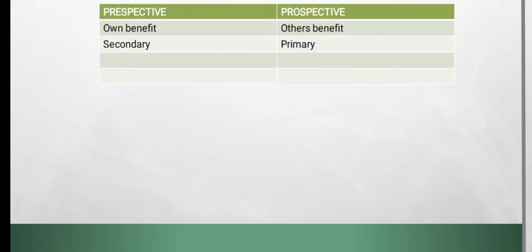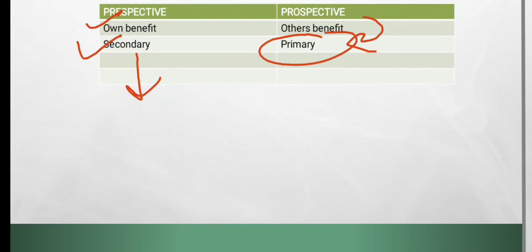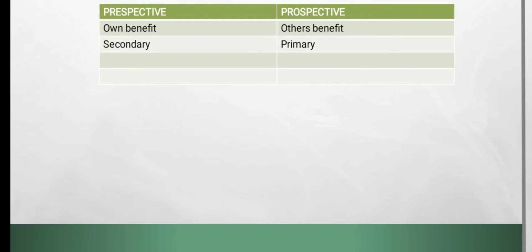Now let's talk about prospective versus mass screening. Prospective screening means people are screened for their own benefit — it is a secondary type, just for case detection and treatment, with no special request. Examples include neonatal screening, Pap smear, and urine for sugar. Mass screening is for others' benefit — it is a primary type for disease control, with a specific request from authority. An example is screening of immigrants.